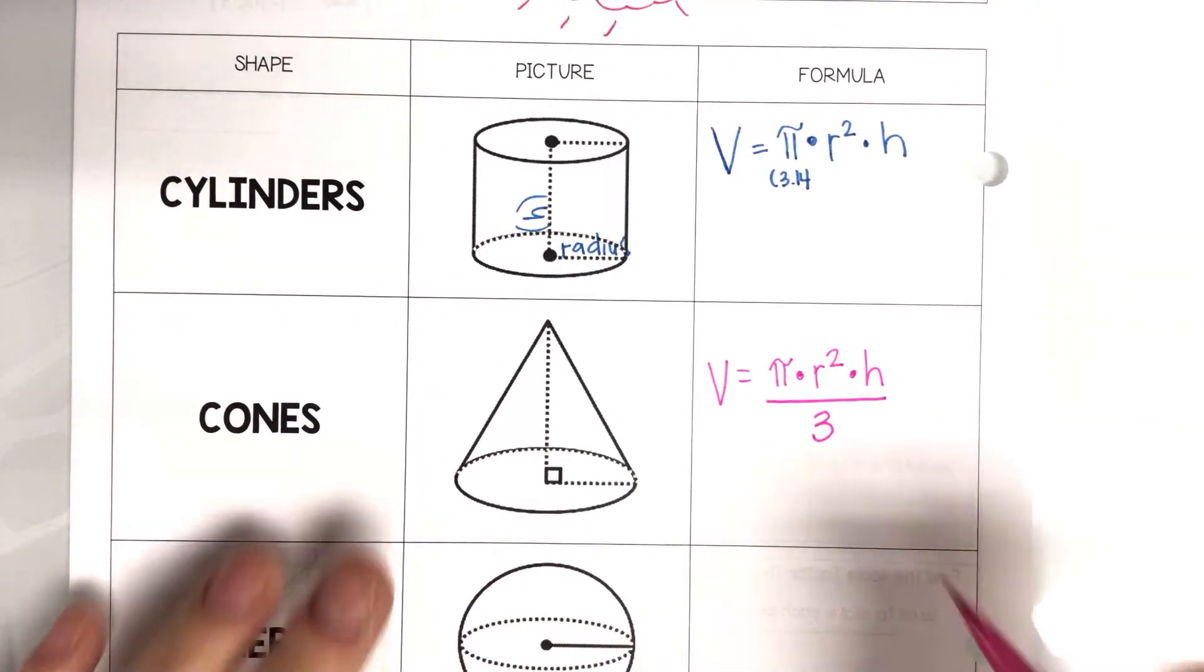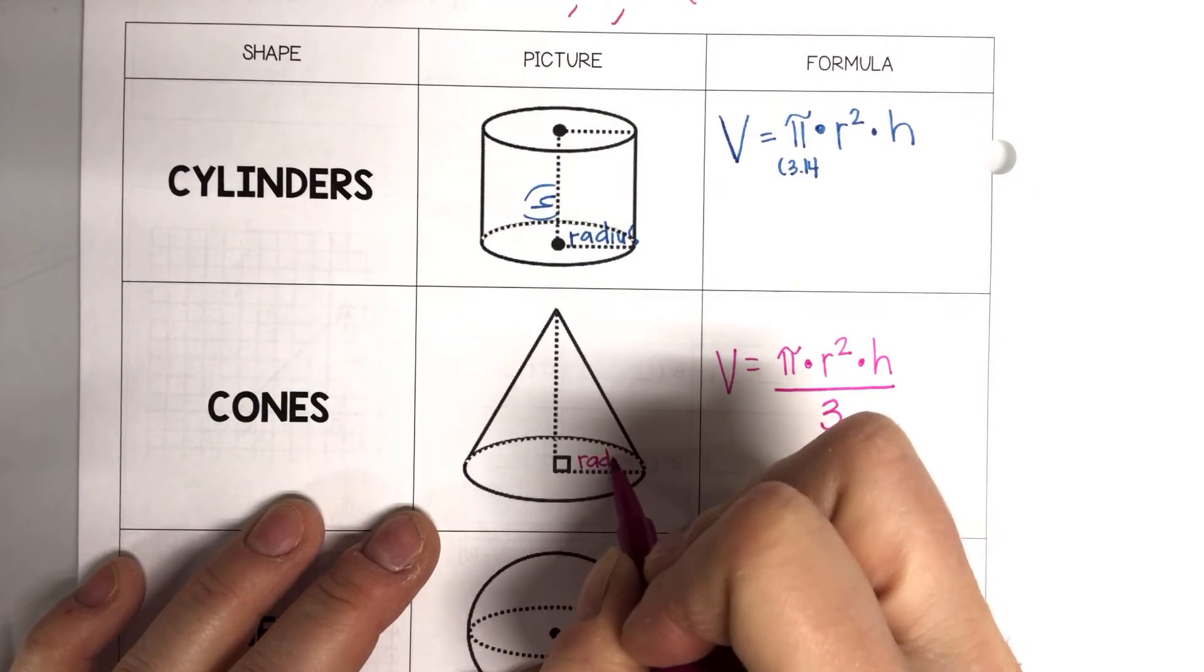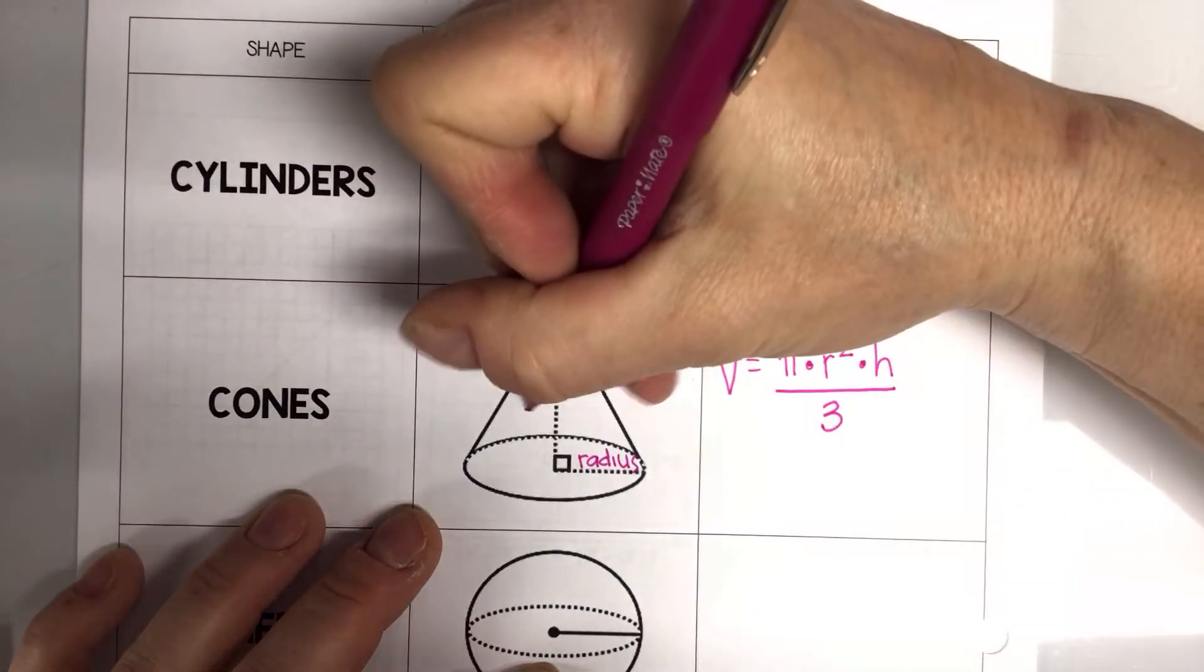So again, your radius is always attached to your circle. And then this would be your height.